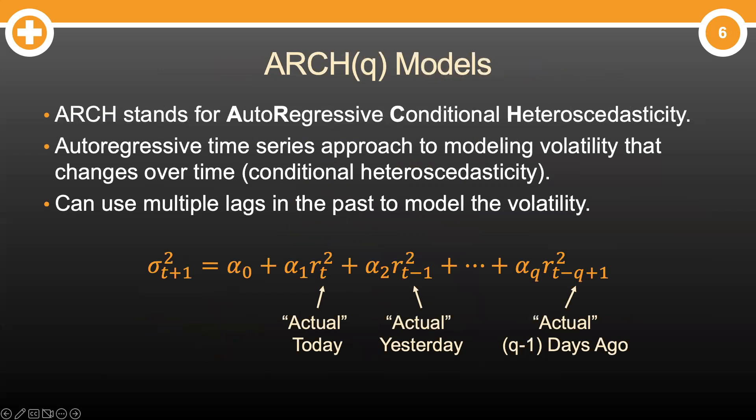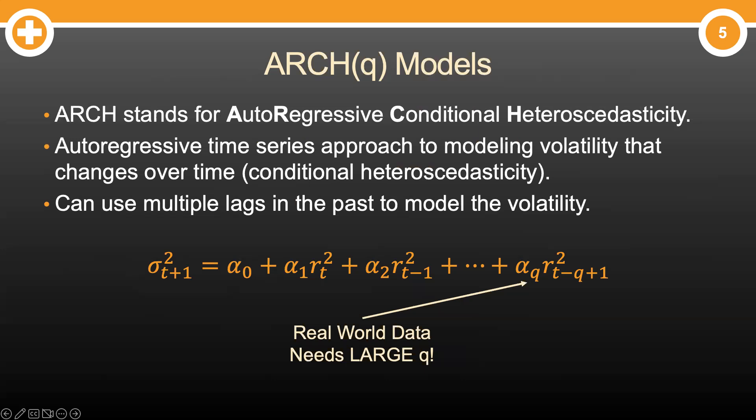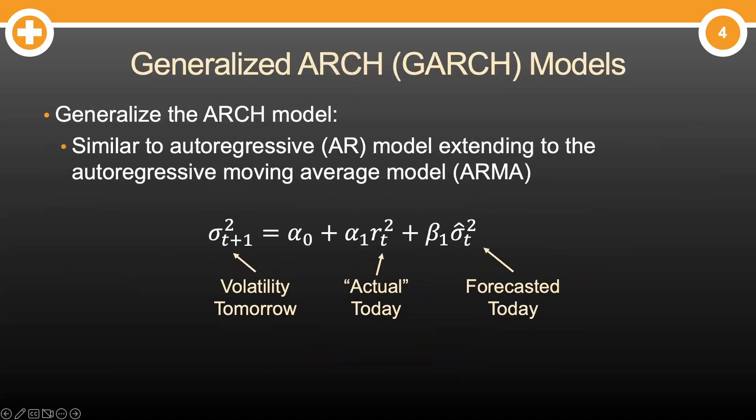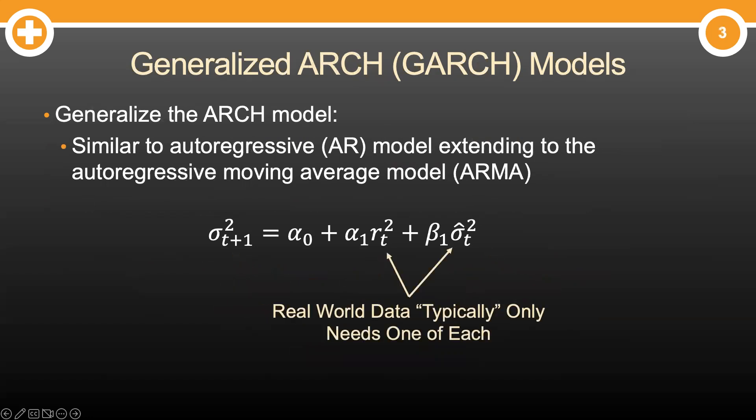You can have many lags in your ARCH model — we label these models as having Q lags. The only downside is that estimating real-world data typically leads to large values of Q. This leads Tim Bollerslev in 1986 to create the generalized version of this model called the GARCH model, kind of like extending the AR model to the ARIMA model in regular time series. This model has both the actual value of today as well as your forecasted value of today to estimate the volatility of tomorrow. Typically in real-world data we only require one of each, which makes this much easier to estimate.